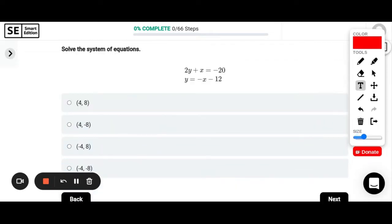Solve the system of equations: 2y plus x equals negative 20 and y equals negative x minus 12. So when we do systems of equations we have two options. We can either use substitution or we can use elimination. For this example I'm thinking substitution would be best because I have this one on the bottom that tells me that y equals something. So y equals negative x minus 12. I'm going to plug that in to this y in the first equation.